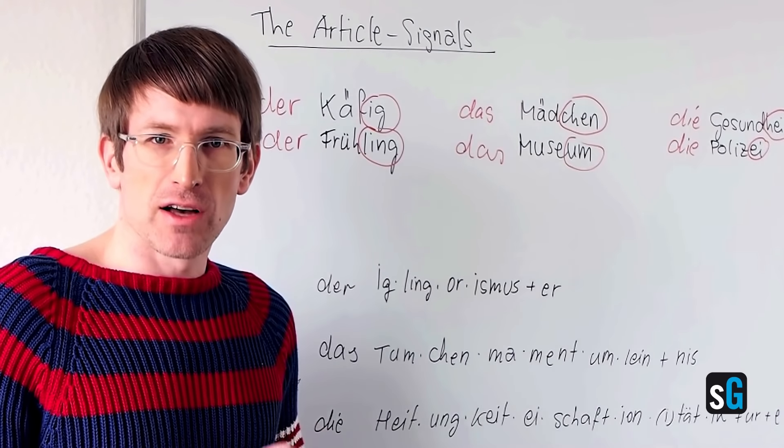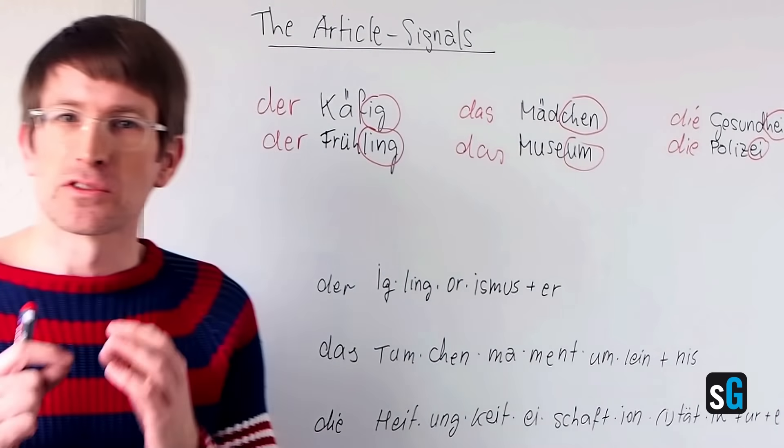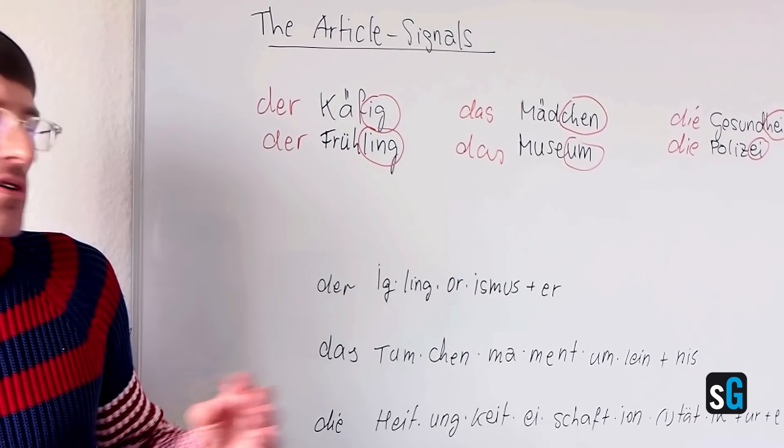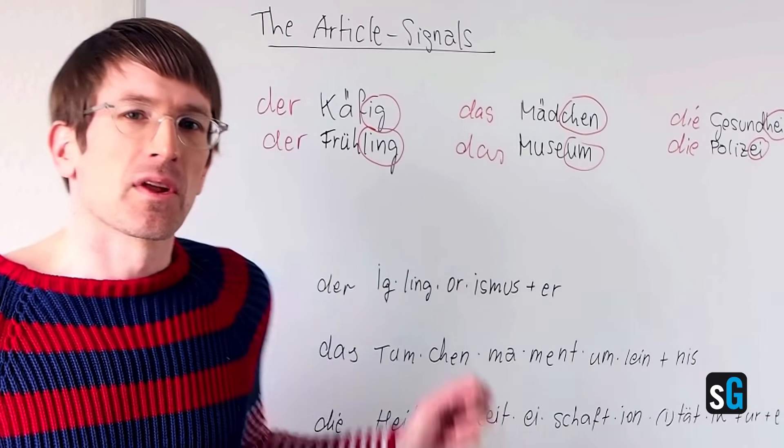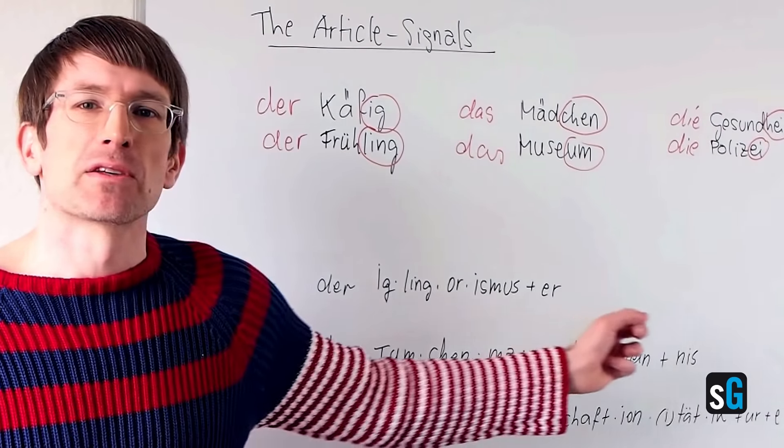If you say these fast, if you learn these right, in the end it will sound like this: 'Der Iglingorismusär, das Tumchen Momentum Leinness, und die Heitungkeit Eischafzion Itetik Ure.' You see, I don't have to think about it anymore, and it takes less than a second to recall them all. So this is your aim — learn them well so you can remember them quickly.